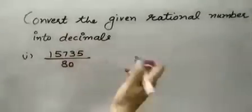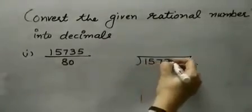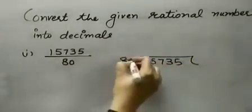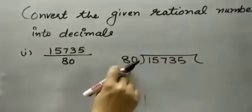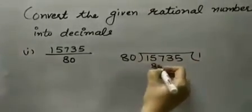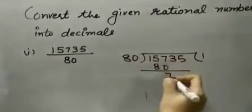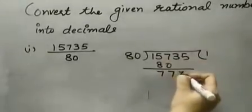I am going to choose the long division method. Now, first 1 then 15 is smaller than 80, 150, 7. 80 ones are 80. 7 minus 0, 7. 15 minus 8, 7.